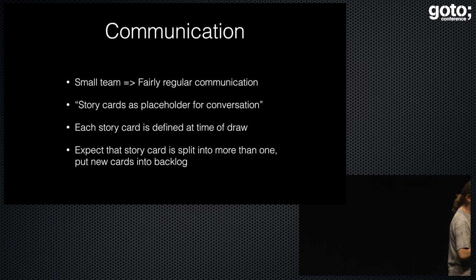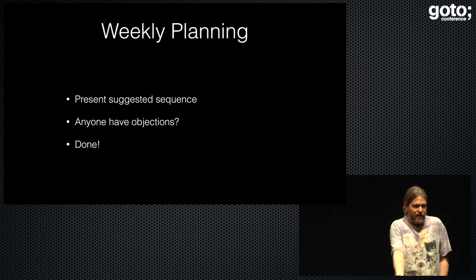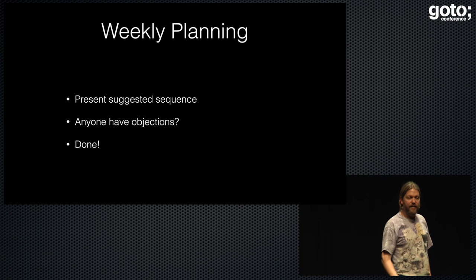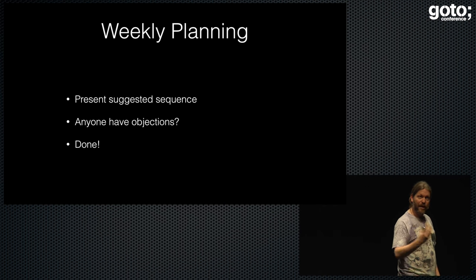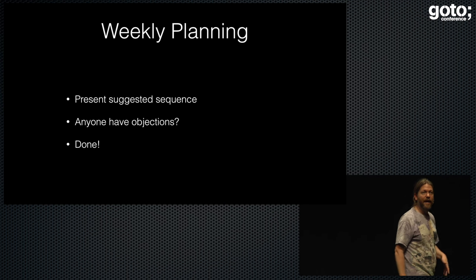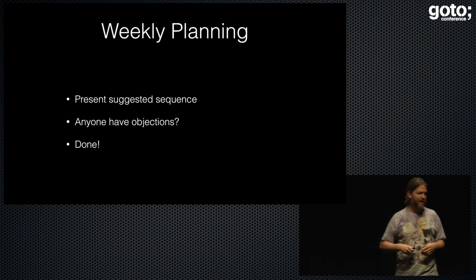We would end up splitting cards up quite a bit. Our weekly planning ended up being: the developers would come and we'd present the sequence — we'd talked to everybody through the week, we knew what we were doing, this is kind of what we're going to do this week, anyone have objections? Rarely, sometimes if there was something we didn't know about — a really big bug or something — someone would say: I have an objection, I need this done right away. At that point we could interrupt and put that in.